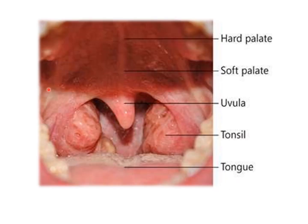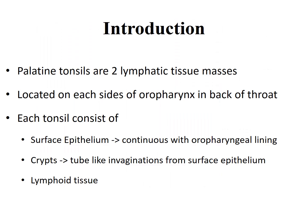This picture presents partly the oral cavity and mainly the oropharynx. These are the palatine tonsils with prominent crypts. The soft palate and uvula are also visible. The palatine tonsils are two lymphatic tissue masses located on each side of the oropharynx, in the back of the throat. Each tonsil consists of surface epithelium, which is continuous with the oropharyngeal lining, and crypts, which are tube-like invaginations from the surface epithelium.